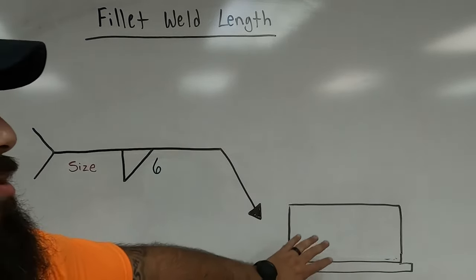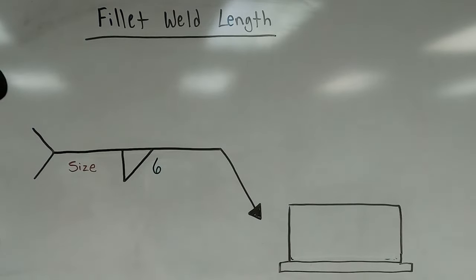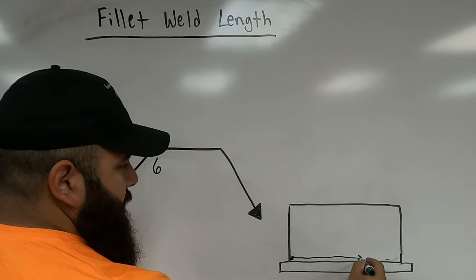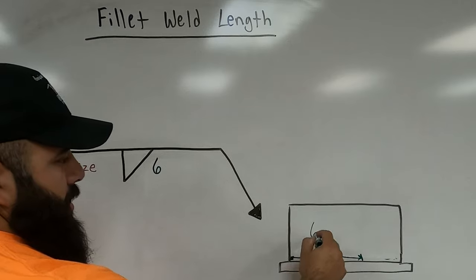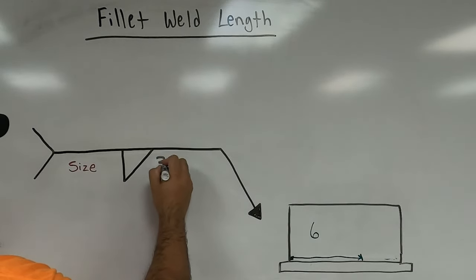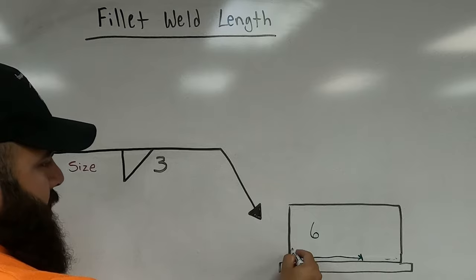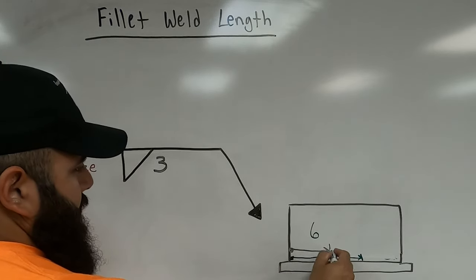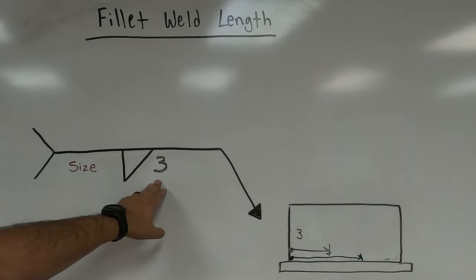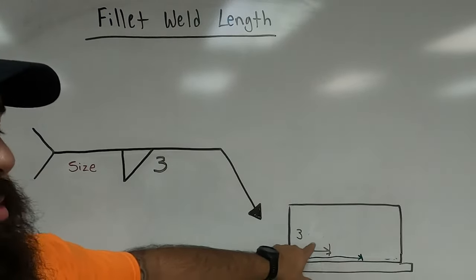So if we have a T-joint and see a length of six, the start of our weld to the end measures six inches. If instead we see a three, the weld is three inches long. Whatever number appears directly to the right of your fillet weld symbol tells you how long your weld needs to be.